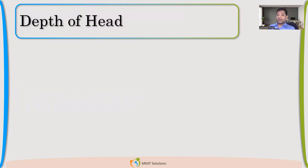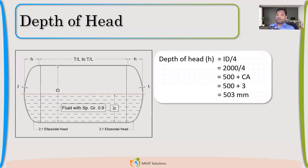Once I have that internal pressure, I'll calculate that depth. Depth is nothing but ID divided by 4. Be careful of using that corrosion allowance. So 503.